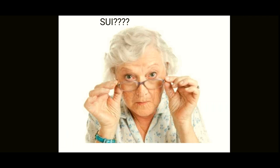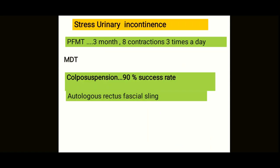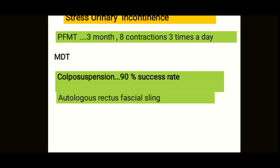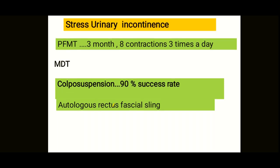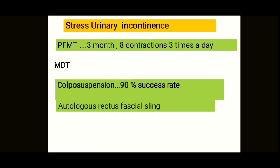For stress urinary incontinence — whether genuine or predominant in mixed incontinence — pelvic floor muscle exercises are the first line, given for three months, after completing the initial assessment steps. Patients are instructed to perform around eight contractions three times a day, such as by practicing holding wind.